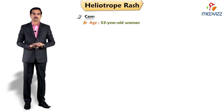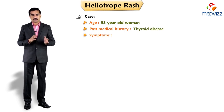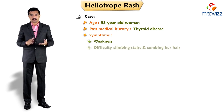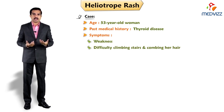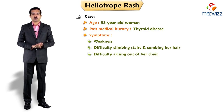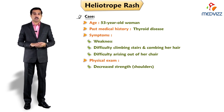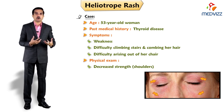A 53-year-old woman with a past medical history of thyroid disease presents to her physician's office for weakness. She reports that she has been feeling weak, has difficulty climbing the stairs and combing her hair every morning. Today she also has difficulty arising out of her chair, and physical exam reveals decreased strength, especially in the shoulders.